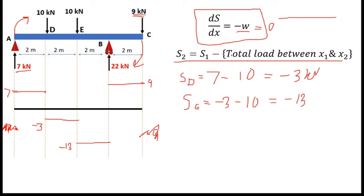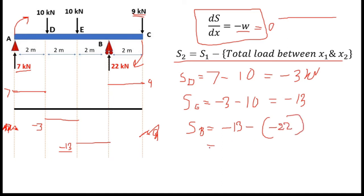You can also check this value by applying the equation for point B: SB = S1 minus total load at B. The previous shear force value is minus 13. At B there is a force of 22 kN, but its direction is upward. According to our sign convention downward is positive, so upward is negative: minus 22 kN. So SB = minus 13 minus (minus 22) = minus 13 plus 22 = plus 9 kN. This matches the value we already found at BC, confirming our calculation is correct.